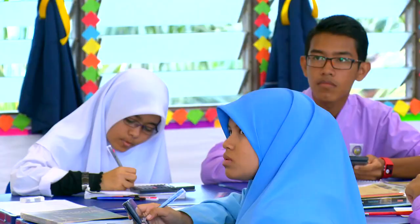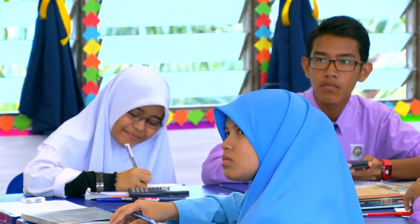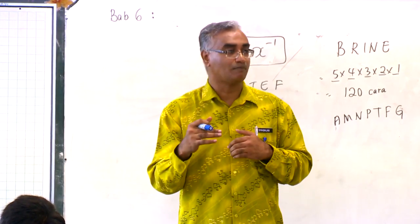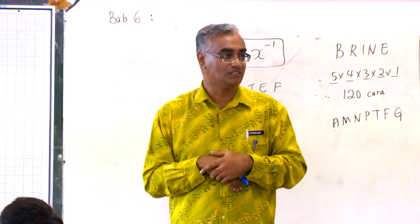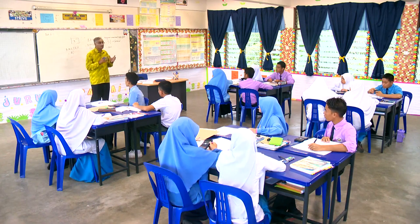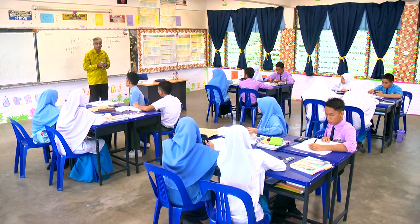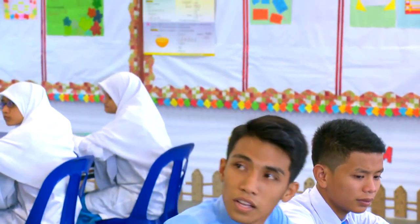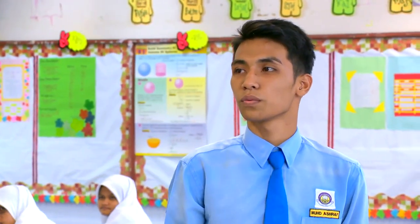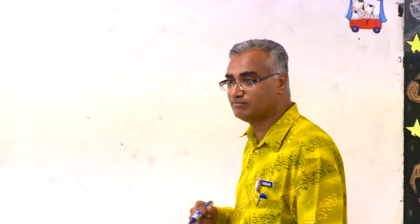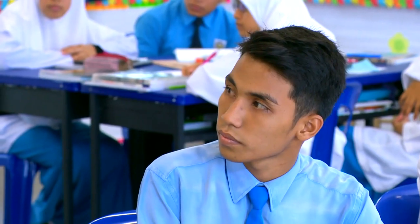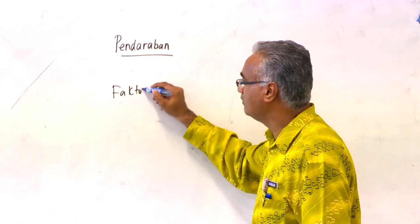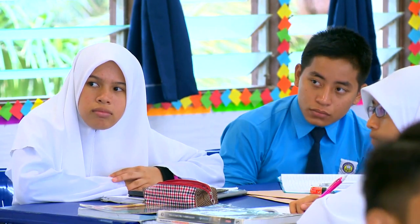Itu sesuatu yang memang tak dapat kita bayangkan. Kalau kita buat secara manual, mungkin 2 hari tak siap, dan mungkin salah — sebab kita mungkin tertulis 2 yang sama atau 3 yang sama. Kita tak boleh menyusun 5,040 cara secara manual. Tidak mungkin. Ada soalan? Rumus untuk pilih atur. Tadi saya telah terangkan 2 cara: kaedah pendaraban dan menggunakan faktorial.